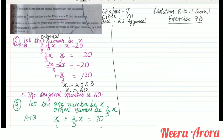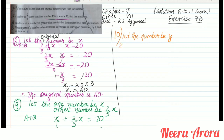Now look at question number 10: 2/3 of a number is greater than 1/3 of the number by 3. Find the number. Let the unknown number be y. According to the question, 2/3 of a number is greater than 1/3 of the number by 3.